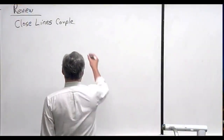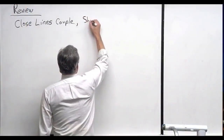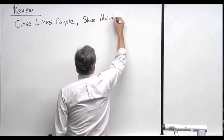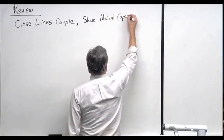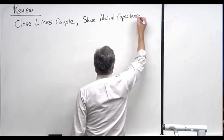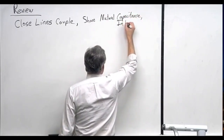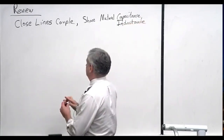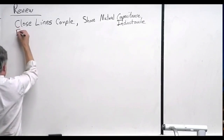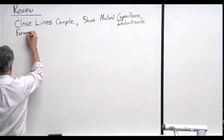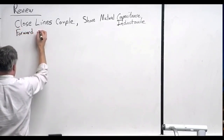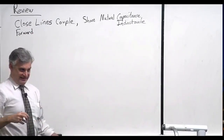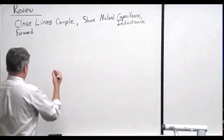Close lines couple because they share mutual capacitance and inductance. We came up with a circuit model and defined forward crosstalk, which is basically a signal jumping onto another line and traveling in the same direction as the exciting signal on the nearby line.